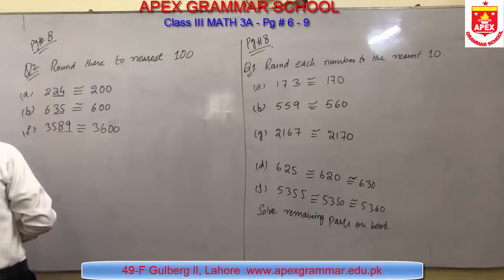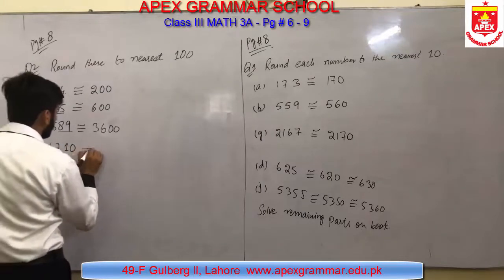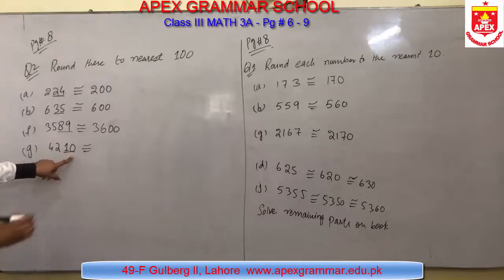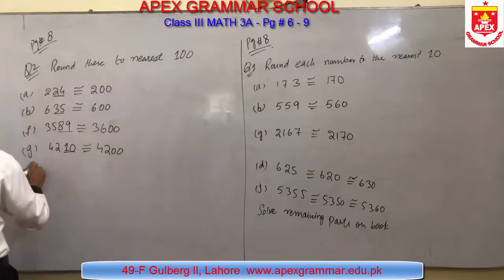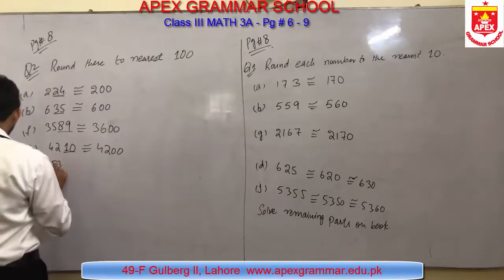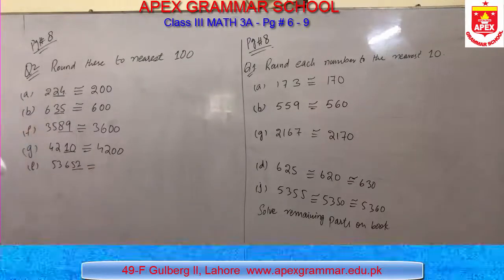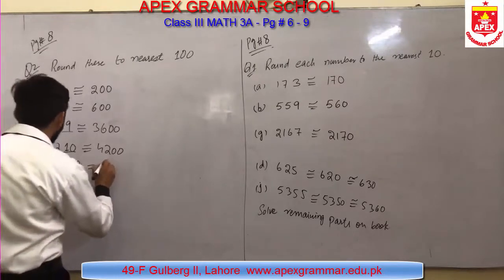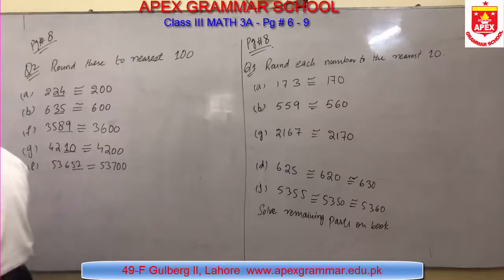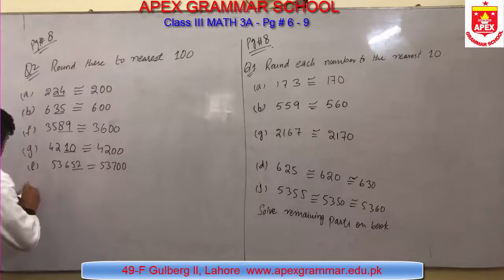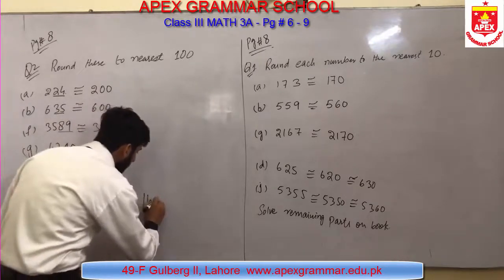Part F is 3589. The last two digits are 89, which is greater than 50, so we move forward. After 3500 it is 3600, so 3589 rounds to 3600. Part G is 4210 — last two digits are 10, which is less than 50, so the answer is 4200. Part L is 53652 — last two digits are 52, which is greater than 50, so the answer is 53700. You can solve the remaining parts in the book.